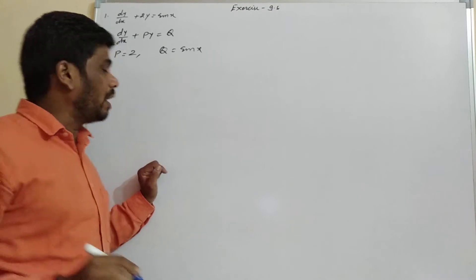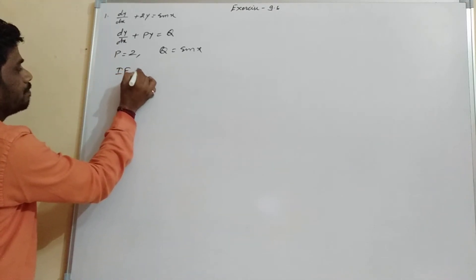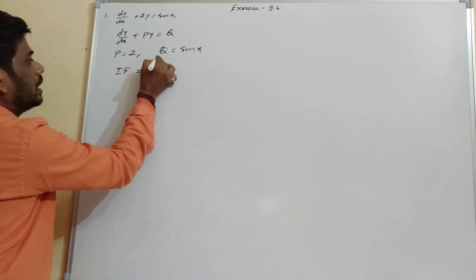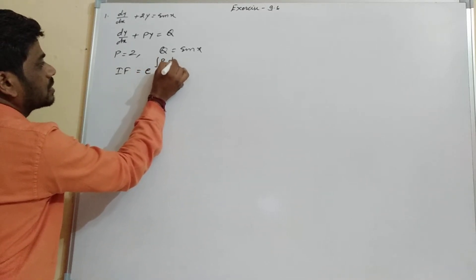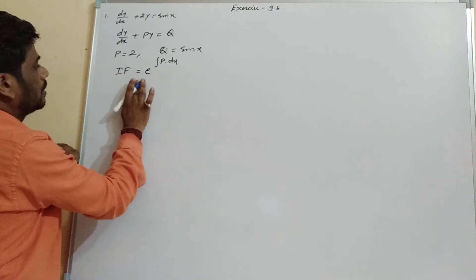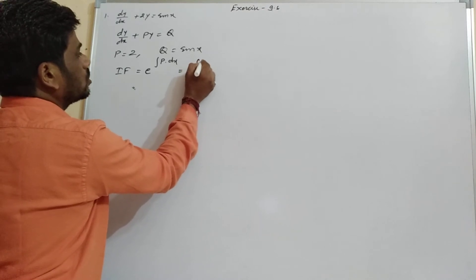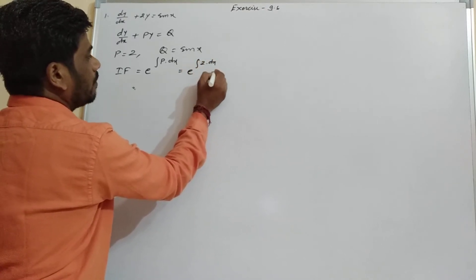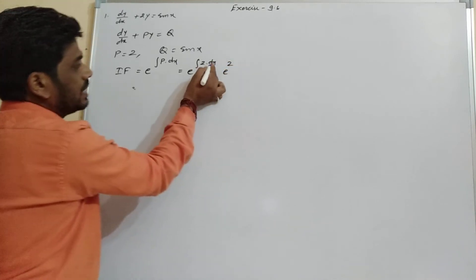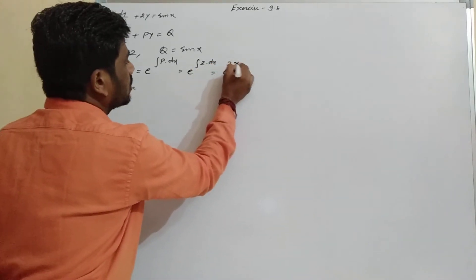Now we have to find IF, means the integrating factor. That is e raised to power integration of P into dx. P is 2, so it will be e raised to power 2x — that is, 2 is taken outside and integration of dx gives x.